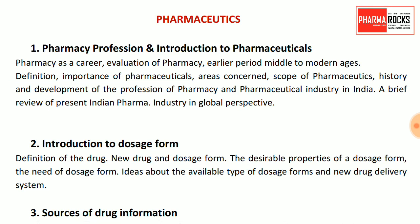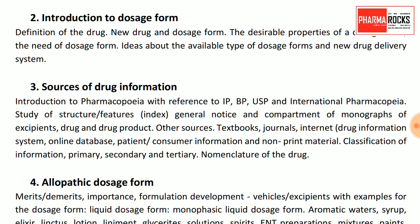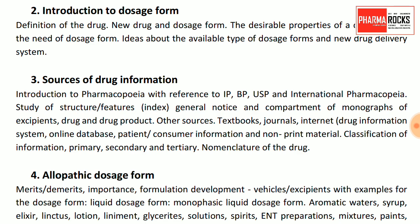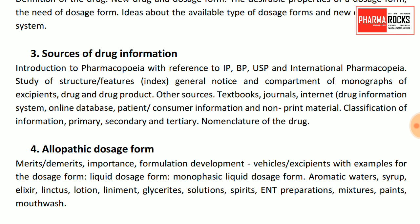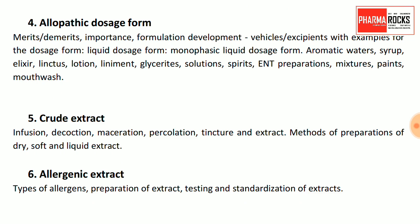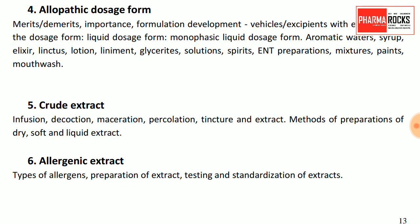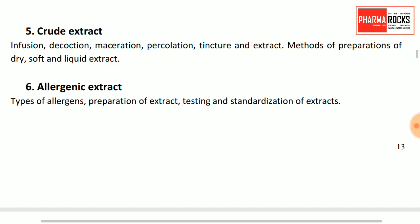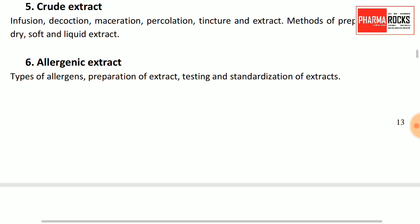In pharmaceutics, start with pharmacy profession and introduction to pharmaceutics, introduction to dosage forms, novel drug delivery systems, and sources of drug information like Indian Pharmacopoeia, British Pharmacopoeia, USP, and official monographs. Allopathic dosage forms include aromatic waters, syrups, elixirs, linctus, lotions, liniments, solutions, ENT preparations, mouthwashes, and gargles. Crude extracts like infusions, decoctions, maceration, percolation, and tinctures are important.